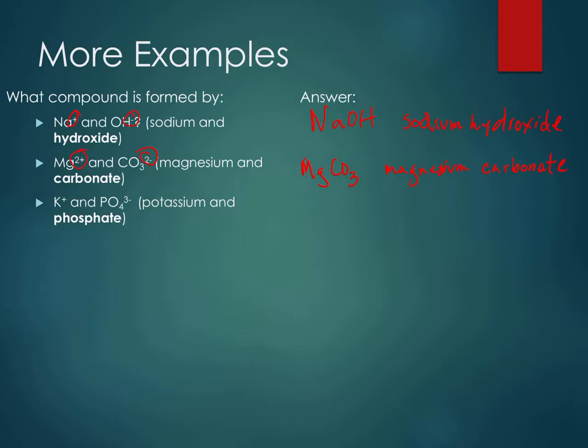What about potassium and phosphate? Potassium is a 1+ charge. Phosphate has a 3-, so we're going to need three potassiums. So it's going to be K3PO4, and that's potassium phosphate.